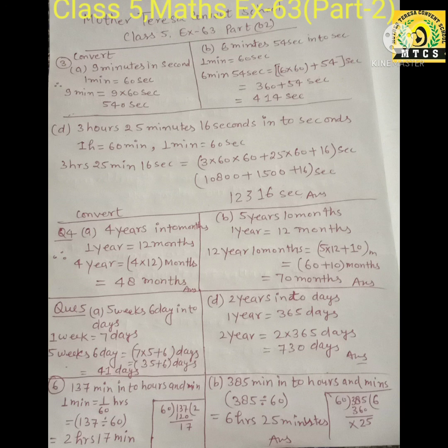Finally you will get 360 plus 54 seconds, after adding you will get 414 seconds. Now part D: 3 hours 25 minutes 16 seconds into seconds — you have to convert this.